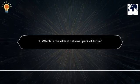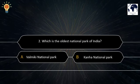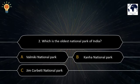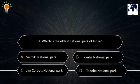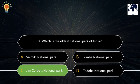Question number 2. Which is the oldest national park of India? Option A: Walmiki National Park. Option B: Kanha National Park. Option C: Jim Corbett National Park. Option D: Tadoba National Park. The correct answer is Option C — Jim Corbett National Park.